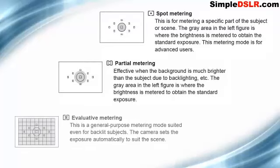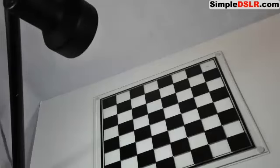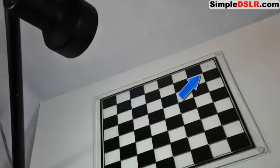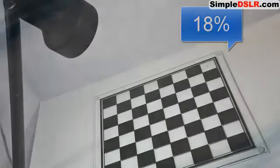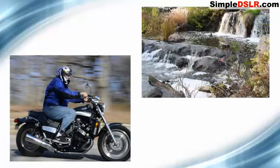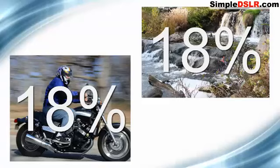Before we start talking about the different metering modes — spot metering, partial metering, matrix metering, and so on — I want to show you the principles that your camera's light meter is based on and how it works. Let's take a look at this example where we have a checkerboard design of equal white squares and black squares, all the same size. Obviously the white squares reflect light while the black squares don't. And if we shine a light on this scene, you might think we'd get 50% of the light reflecting back, because we have equal amounts of reflective and non-reflective blocks. But as it turns out, only about 18% of the light gets reflected off this scene.